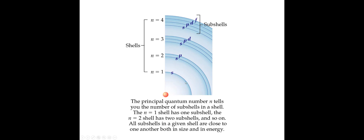This is not a perfectly accurate picture because we're showing shells as perfect circles, but it's a good way to keep things simple. The first shell or energy level only has one sub-shell: 1s. On the second shell, electrons can be in a 2s sub-shell or a 2p sub-shell. Starting with the third shell, we have S, P, and D sub-shells: 3s, 3p, 3d. And the fourth shell has 4s, 4p, 4d, 4f.